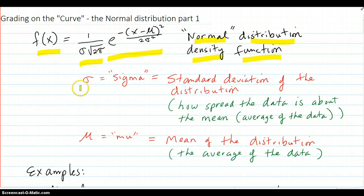So what is sigma doing in there? That occurs here and there. Well, that's the standard deviation of the distribution, which is a measure of how spread the data is from the mean. If the data is clumped close to the mean, it has a small standard deviation. If the data is spread out from the mean, it has a larger standard deviation. Also, what is mu doing in there? That's the mean of the distribution, the average.